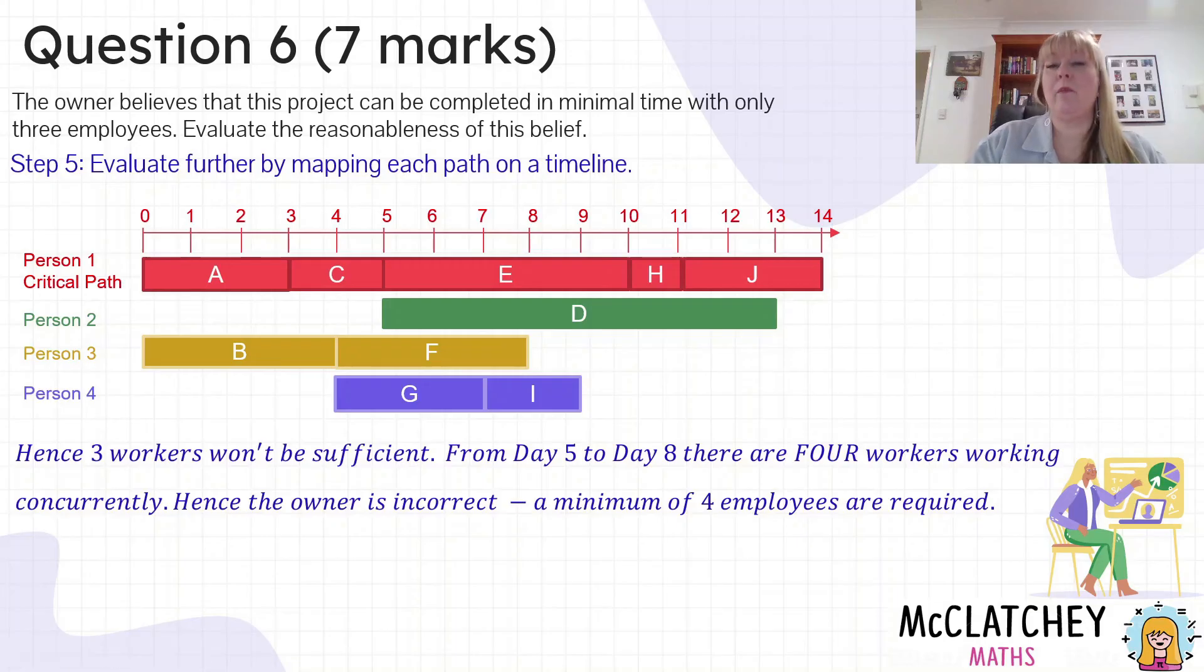So I would highly recommend if you're having to make decisions on how many people to use within a network, you actually map out the work on a timeline. Hence we need to write a statement now that we've evaluated. Three workers are not going to be enough. From day five to day eight there are four workers all working concurrently. Hence the owner is incorrect, and we need a minimum of four employees to do this project. That got us another mark for evaluating that at the end. We also got another mark for saying that we need four employees. So it's not enough to just say no, three is not enough, he's wrong. You've also got to say how many are actually needed, and that gets you the next mark.